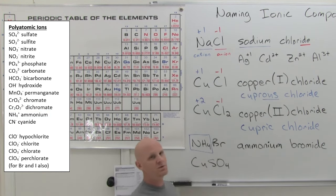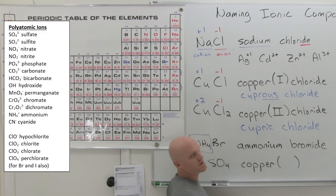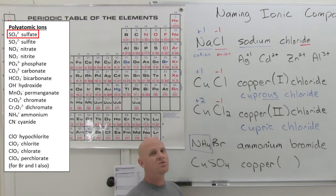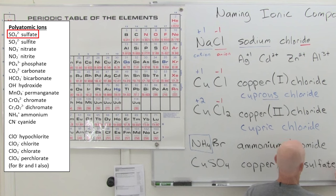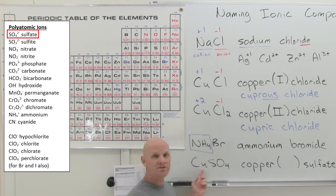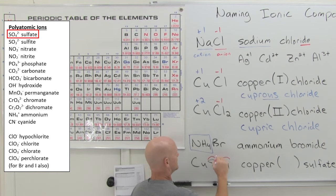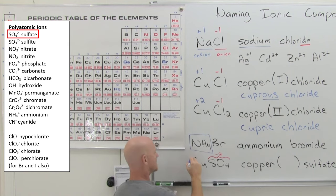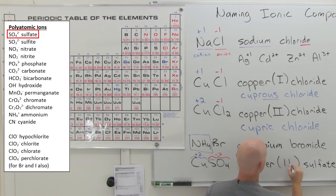One more example: a copper compound with sulfate. Copper is the cation — we name it first and need to prepare to put a Roman numeral in parentheses. SO4 is sulfate (had it been SO3, it would be sulfite). The sulfate ion has a negative two charge, and since there is one of them, copper must have a plus two charge to balance. So we write Roman numeral II in parentheses: copper(II) sulfate.